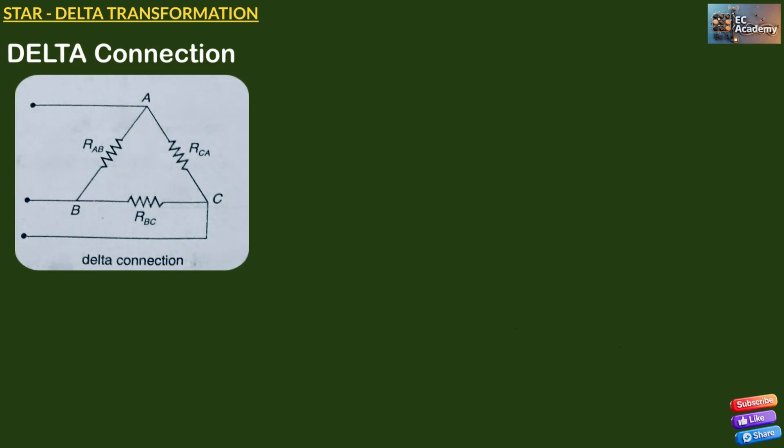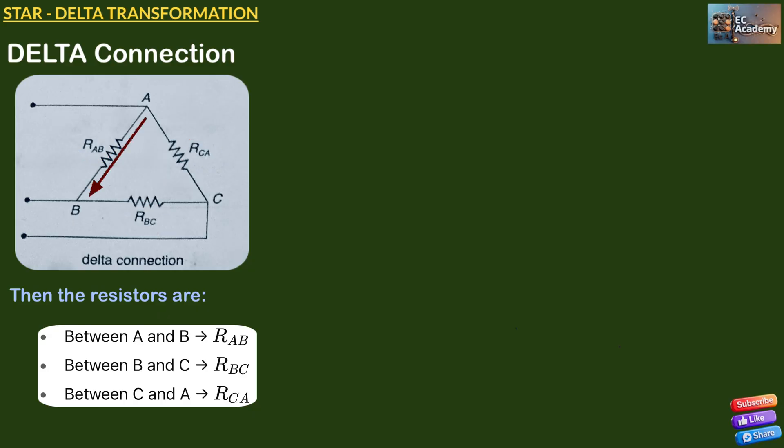A delta connection looks like a triangle. Each side of the triangle represents a resistor connected between two nodes. Let us label the three corners as A, B, and C. The resistors are RAB between A and B, RBC between B and C, and RCA between C and A — so it goes A, RAB, then B, RBC, then C, RCA, back to A.